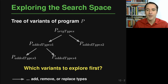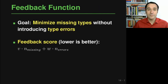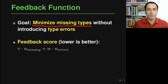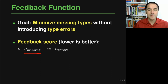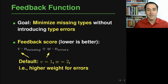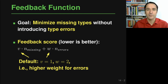The answer is a feedback function that guides exploration of the search space. It looks at two things: minimizing the missing types in the program (adding as many types as possible) while also minimizing the number of type errors introduced. The feedback function combines both the number of still-missing types and the number of type errors into a weighted sum. By default, type errors are given higher weight, so we prefer not adding a type annotation rather than introducing a type error.